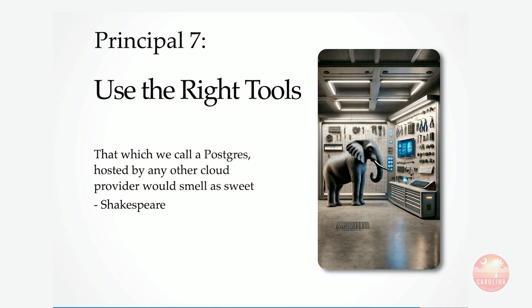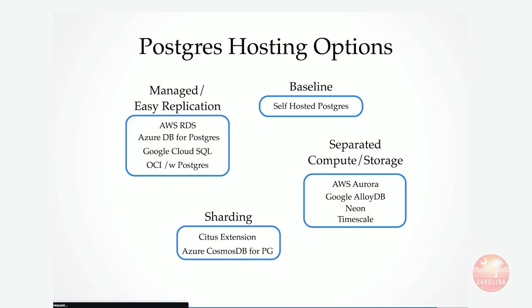The final principle is using the right tools. For hosting, you can self-host Postgres on bare metal, Docker, or Kubernetes, but for many small to medium-sized applications, a managed service from one of the big cloud providers handles backups, monitoring, and networking, and usually has an easy button for replication. For more exotic use cases like distributed compute, serverless, or scalable storage, Neon and Timescale are two independent companies, and the big cloud providers have their own Postgres-compatible solutions. For sharding, Citus is the main extension everyone uses, but if you don't want to run it yourself, Microsoft is happy to do that with Cosmos DB.